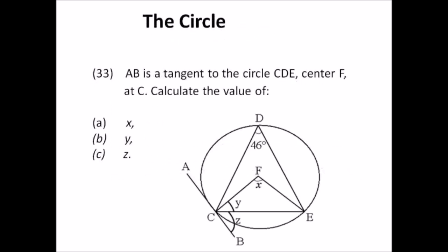Number thirty-three: the circle. AB is a tangent to circle CDE with center F at C. Calculate the values of x, y, and z. This is straightforward once you understand the circle theorems. Find x first using the 46 degrees given — that's straightforward. Once you have x, find y. Once you find y, find z. Do it in that order.